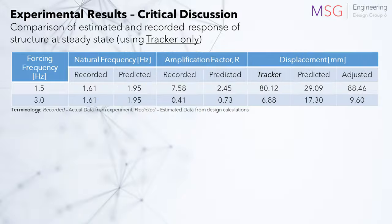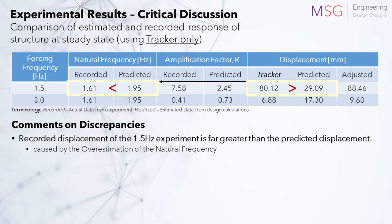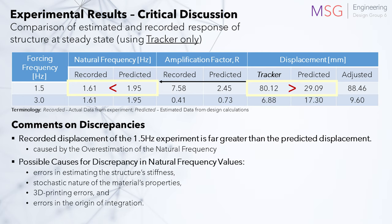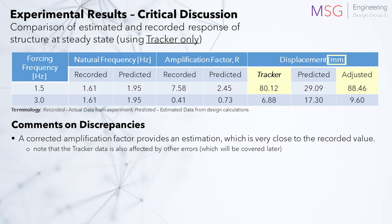Using the 1.5Hz tracker data, the recorded displacement is seen to be far greater than the predicted displacement, which is caused by the overestimation of the structure's natural frequency. These are the possible causes for the discrepancy in the natural frequency values, causing the amplification factor and displacement to be underestimated. To counter this, an adjusted amplification factor was used, giving rise to a reasonably adjusted value as shown here.